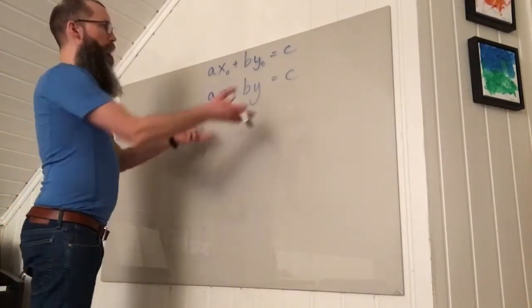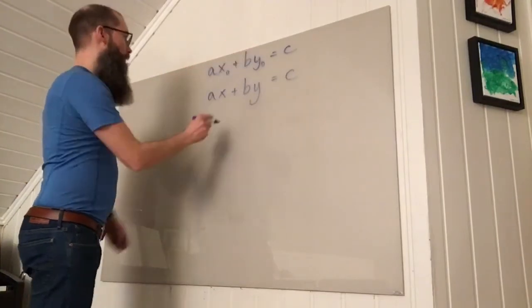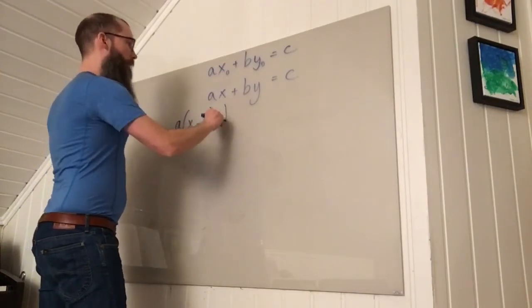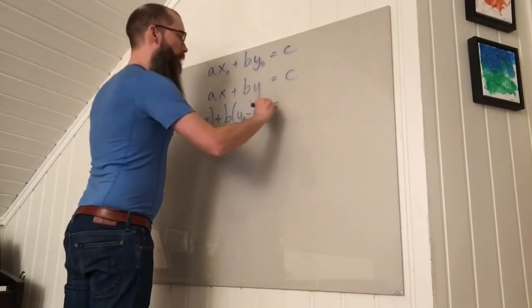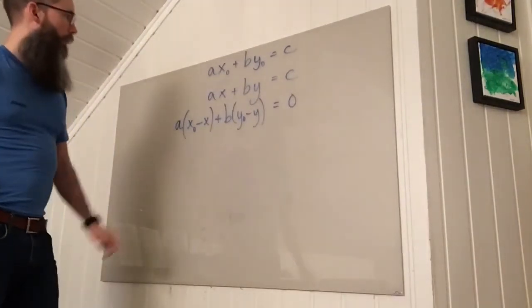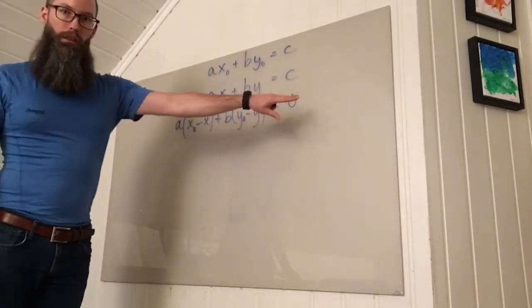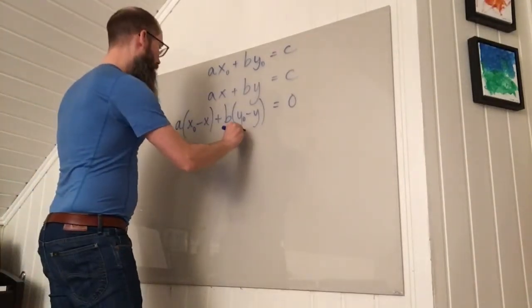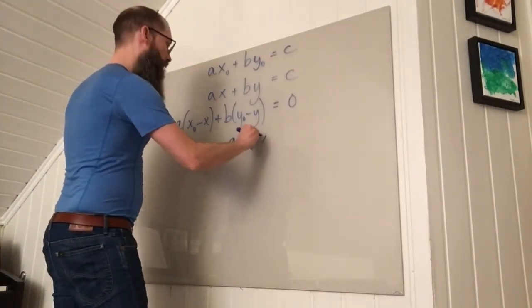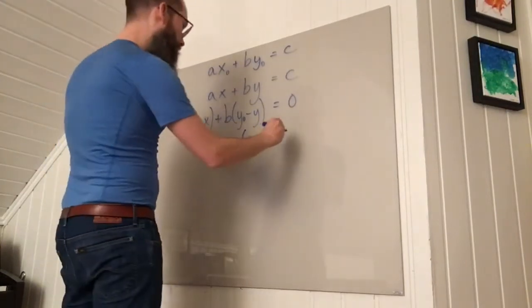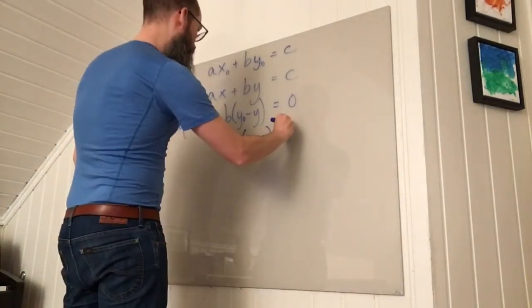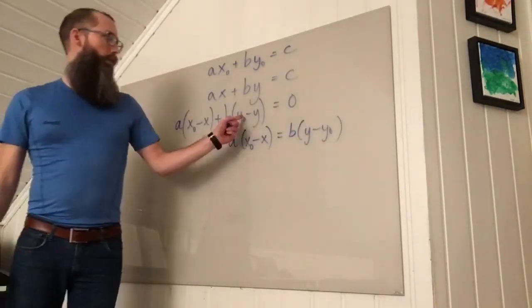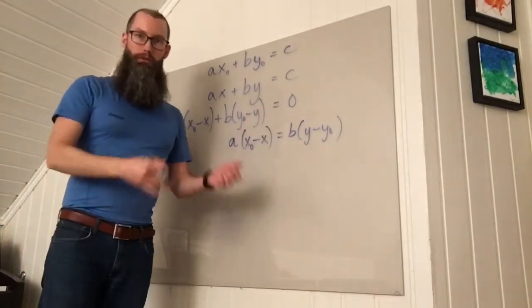So I'll subtract the equations from each other. That gives me A times (X0 minus X) plus B times (Y0 minus Y) equals 0. And then I'll move one of the terms to the other side, switching the sign inside the parenthesis. So I get A times (X0 minus X) equals B times (Y minus Y0). These two parentheses are equal except for the opposite signs.